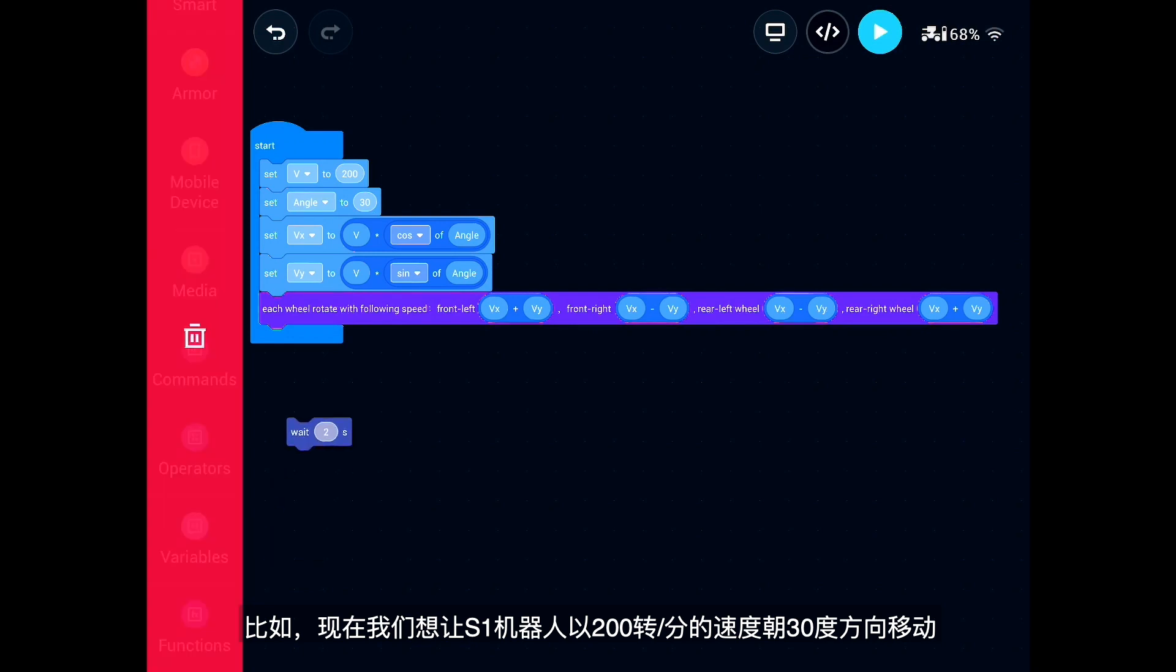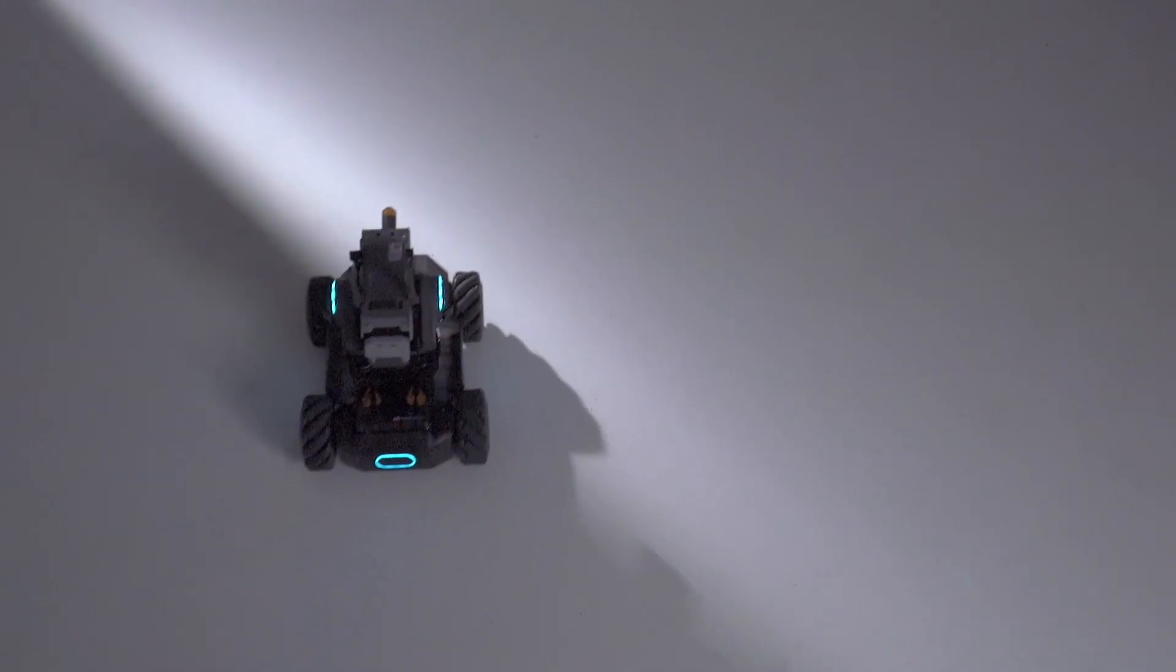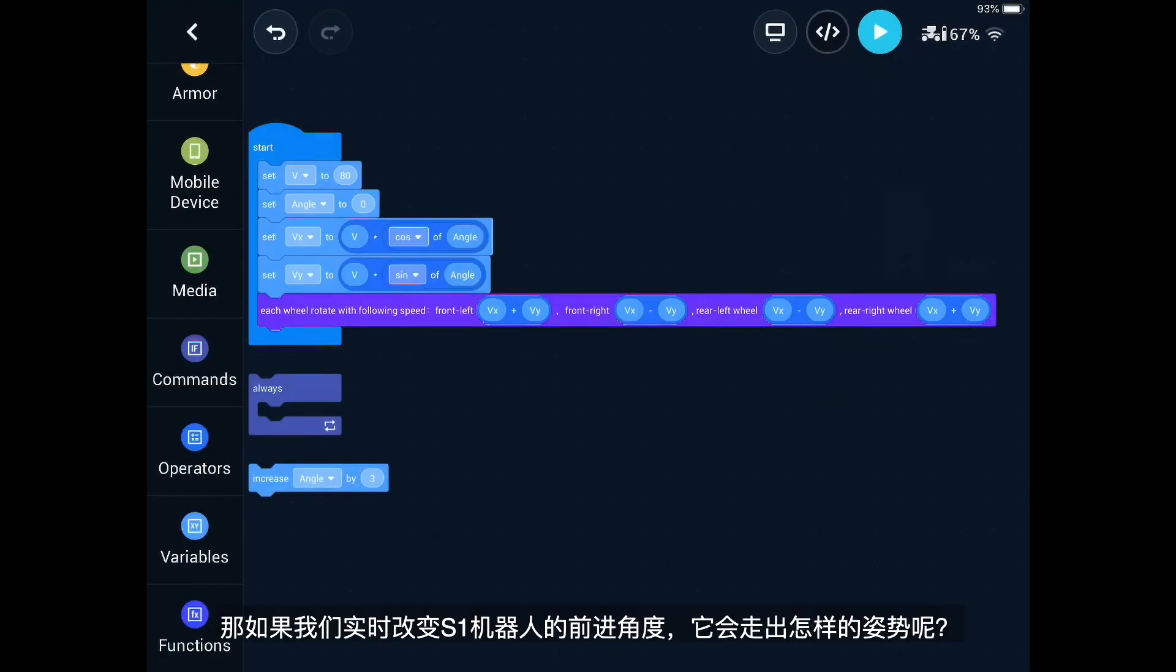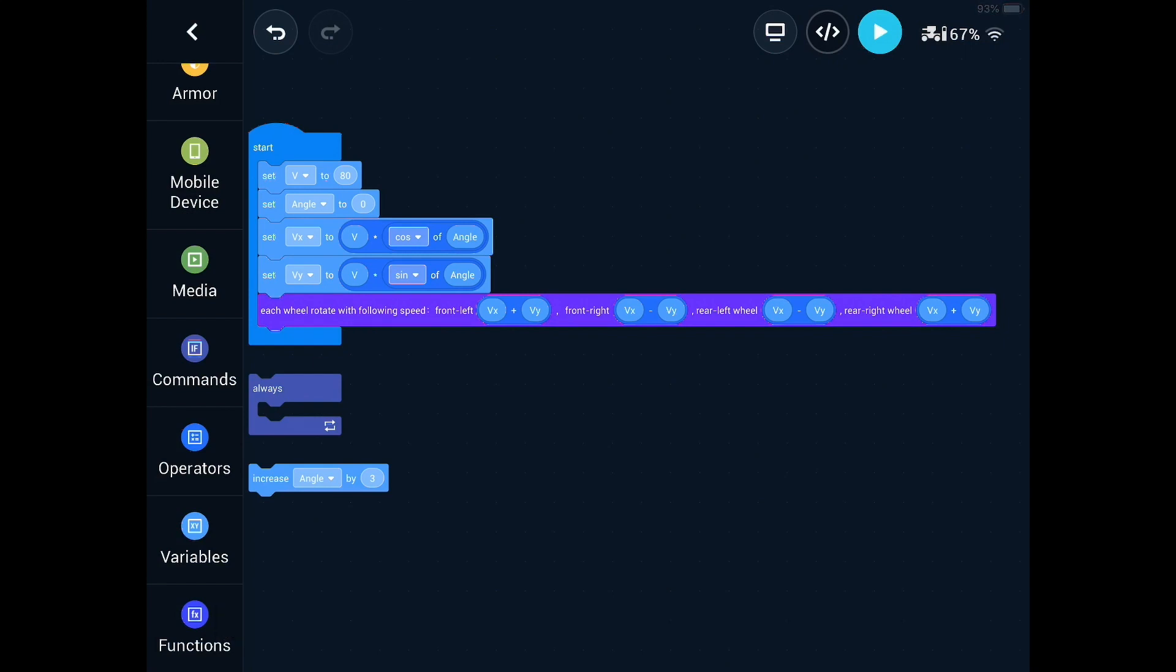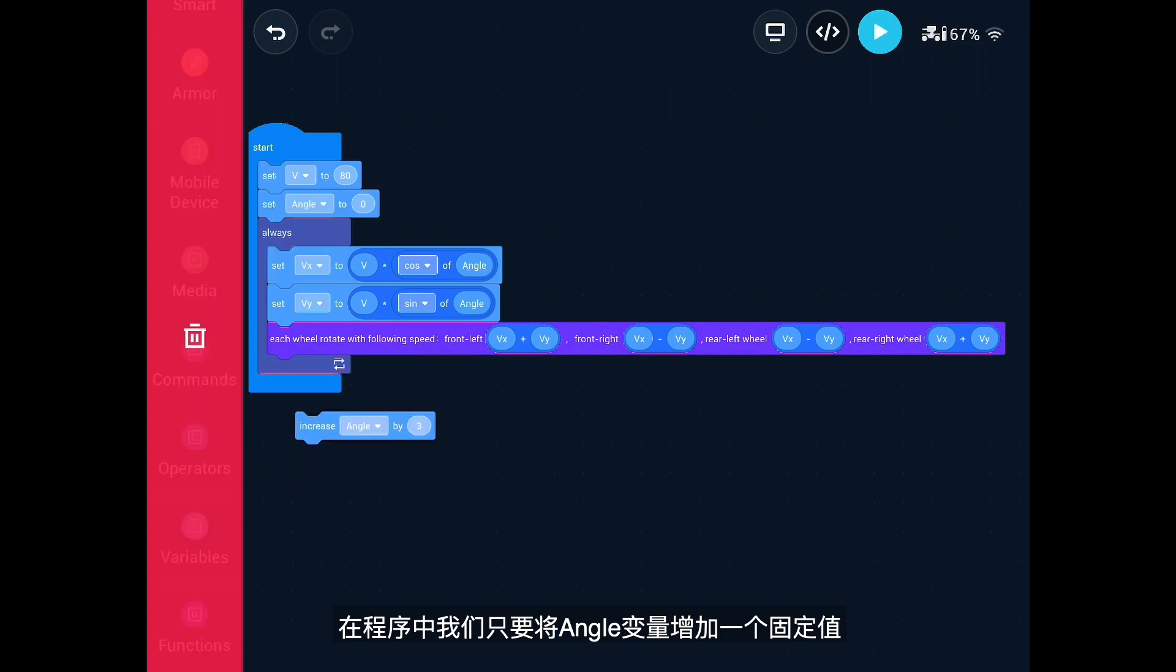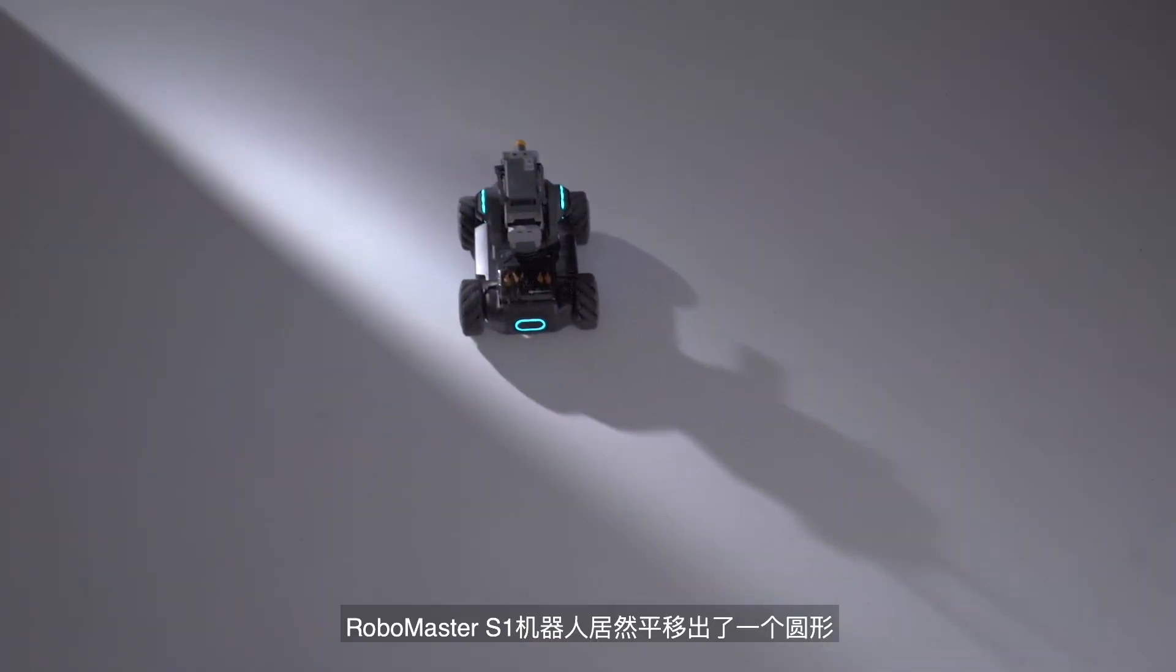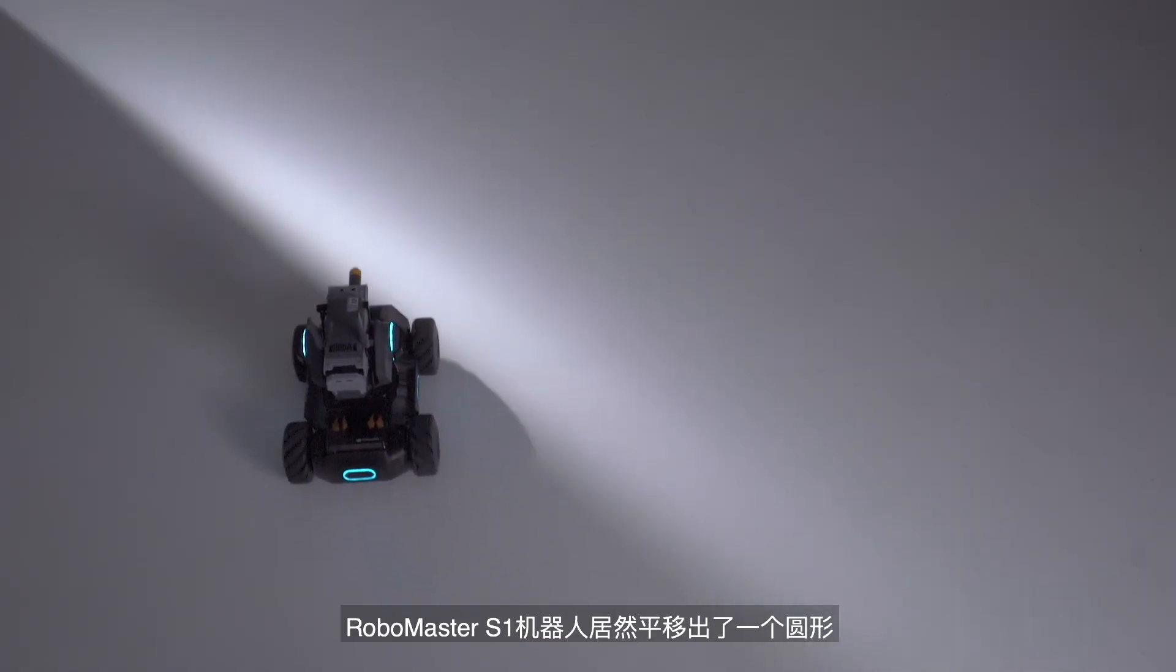For example, now we want S1 to move at an angle of 30 degrees with 200 RPM. So, if we change the angle at which S1 moves, how it will move? Let's have a try. We only need to increase the angle variable by fixed value in the program. When running the program, we will be surprised to find that the RoboMaster S1 is making a circle through translation.